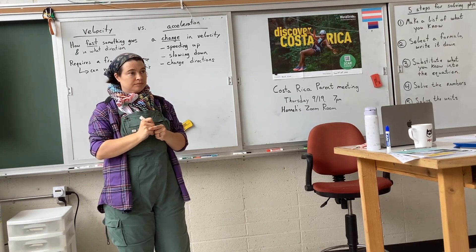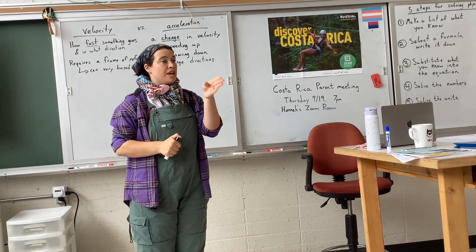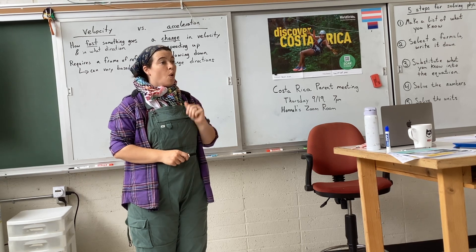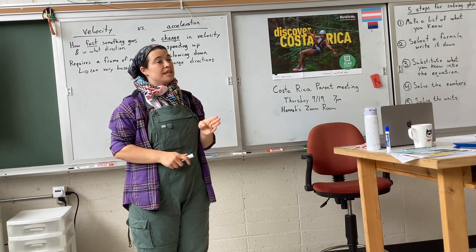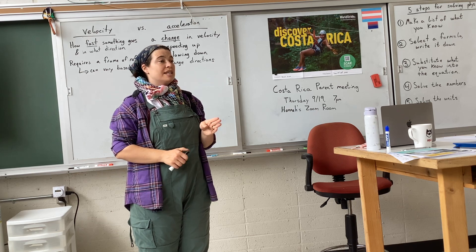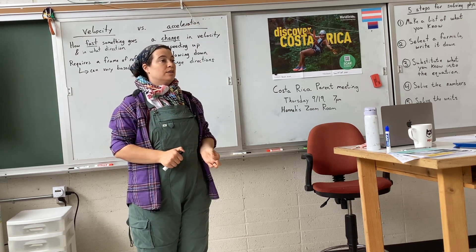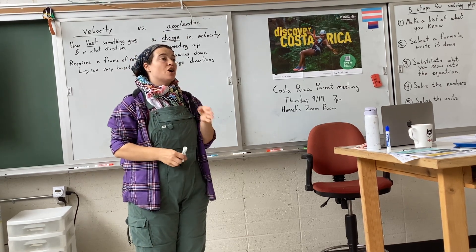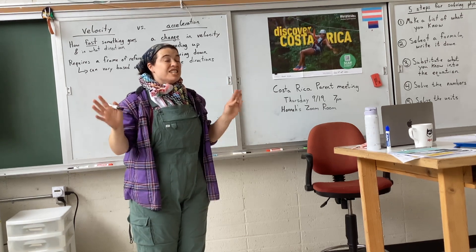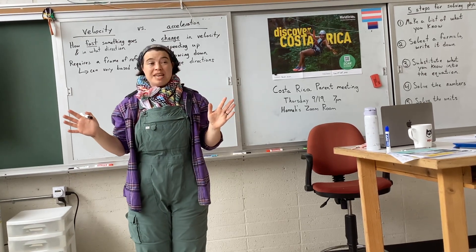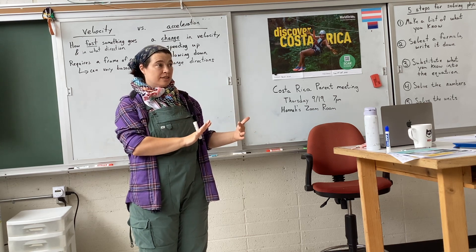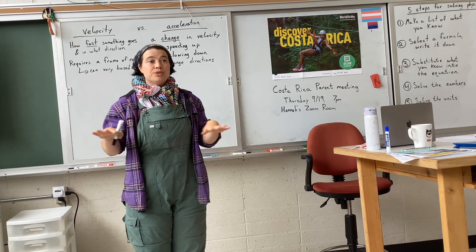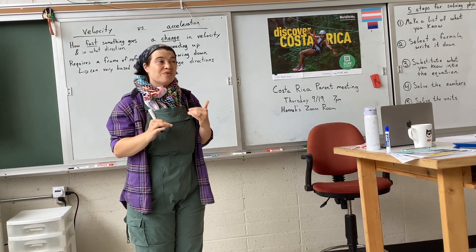What do you mean at the moment? So right now, I could say you are moving zero meters per second relative to the floor of this classroom. Or I could say you are moving 460 meters per second relative to the pole — the line going through the poles of the Earth. Both of those statements are true. There isn't really a difference between an object at rest and an object in motion. Even though we think about them differently, they aren't really different.